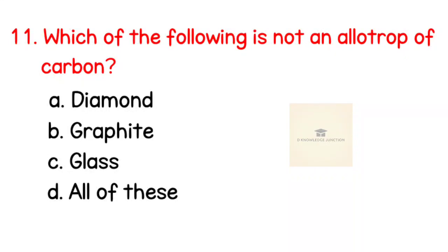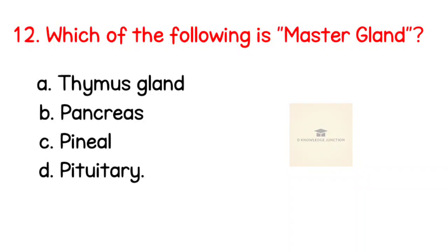Question number 11: Which of the following is not an allotrope of carbon? Right answer is glass. Which of the following is master gland? Right answer is pituitary gland.